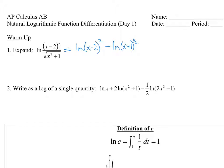Okay, minus ln of (x²+1)^(1/2), and then there we go, 2 times ln(x-2) minus 1/2 times ln(x²+1).